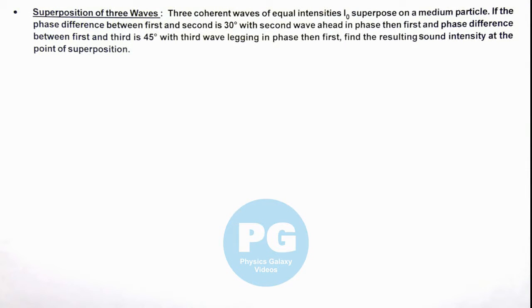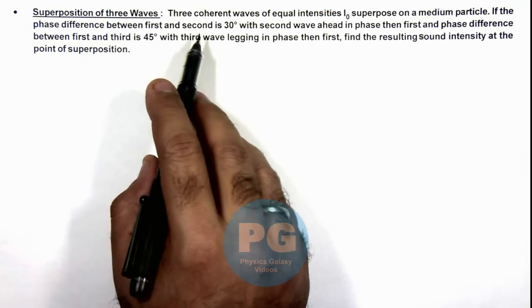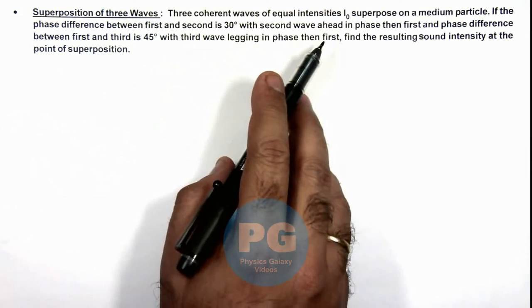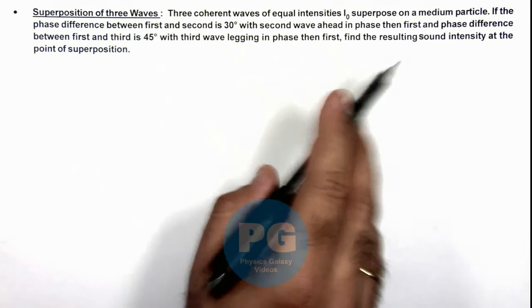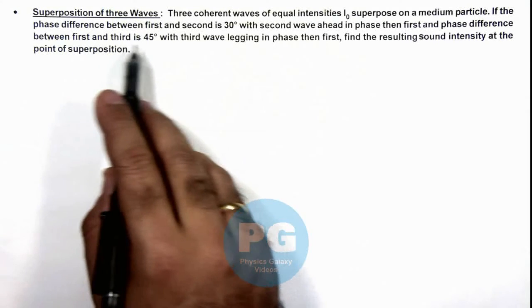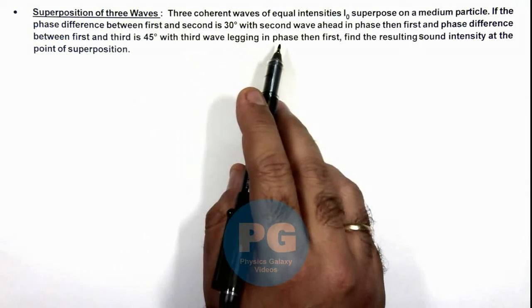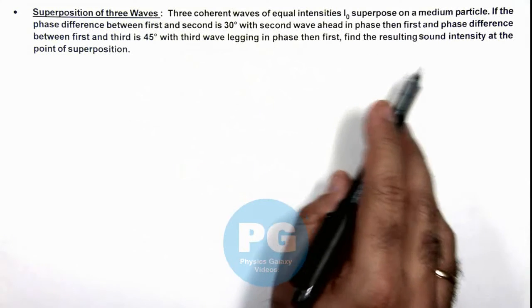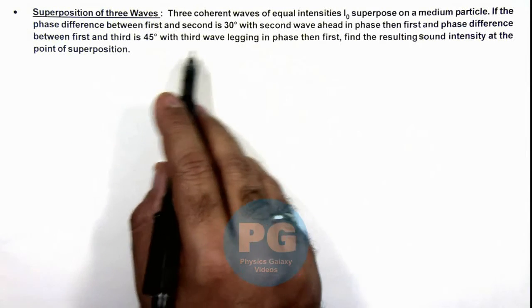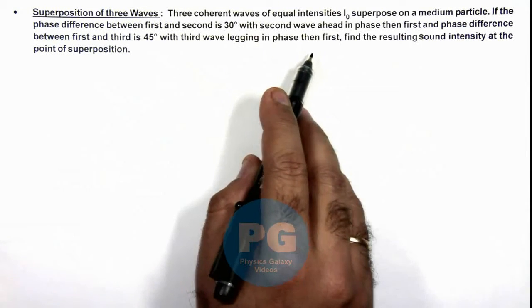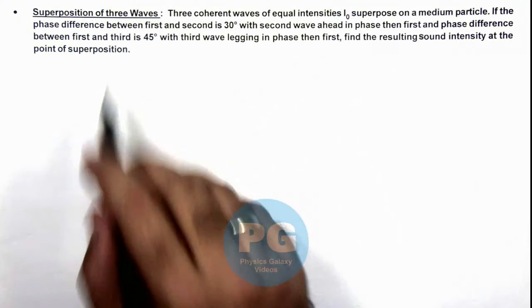In this illustration we'll analyze the superposition of three waves where we are given three coherent waves of equal intensities I₀ superpose on a medium particle. We are given that the phase difference between first and second is 30 degrees with the second wave ahead in phase, and phase difference between first and third is 45 degrees with the third wave lagging in phase. We are required to find the resulting sound intensity at the point of superposition.